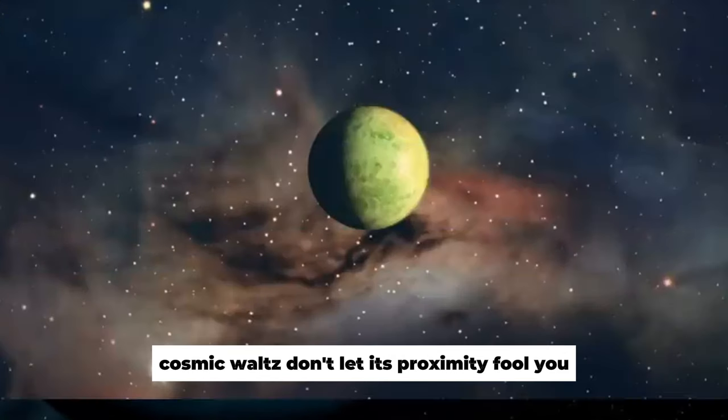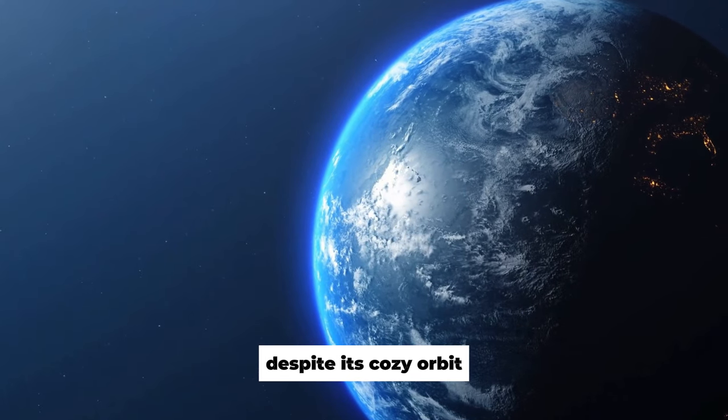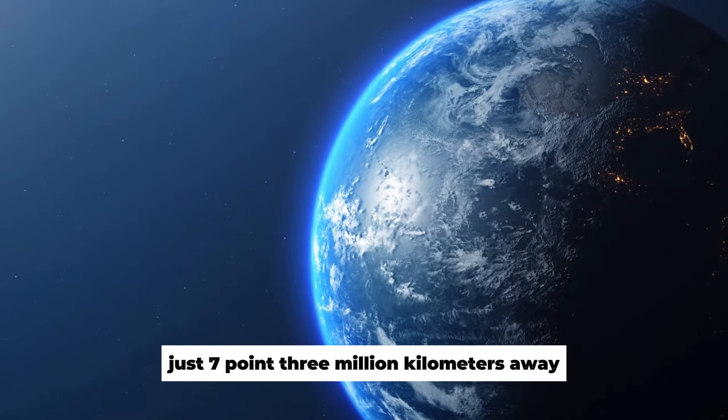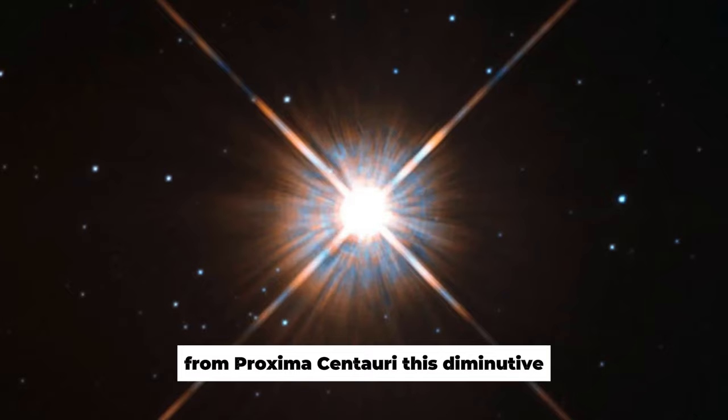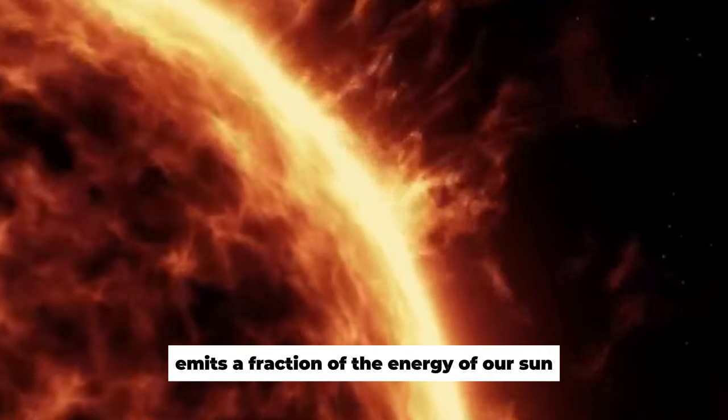Don't let its proximity fool you. Proxima B is not a scorching inferno. Despite its cozy orbit just 7.3 million kilometers away from Proxima Centauri, this diminutive red dwarf star emits a fraction of the energy of our Sun.